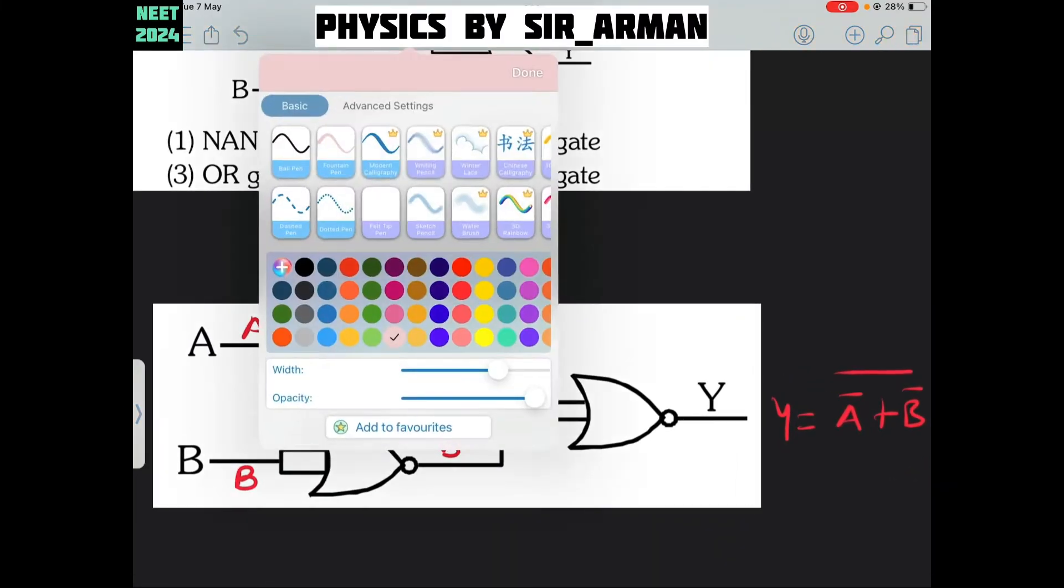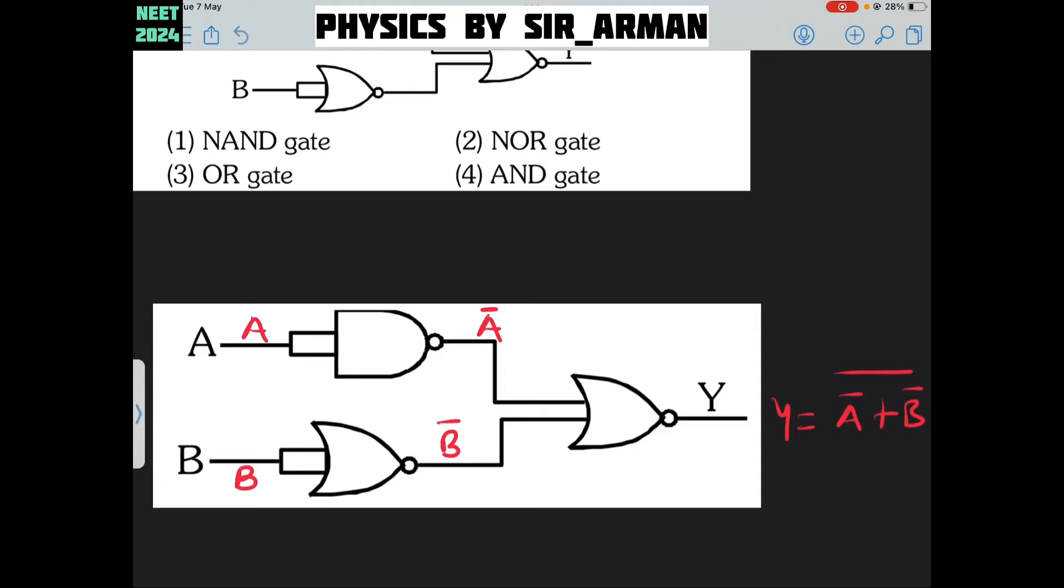Here you can see these are short circuits, means whatever you give here will come on the other side, and it is actually a shorted NAND gate which behaves as a NOT gate. You should learn theory properly, then you will identify that this behaves as a NOT gate.